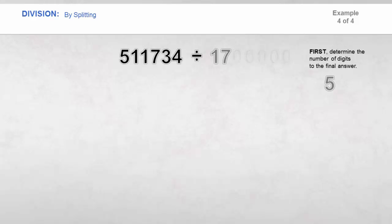The divisor is 17. Therefore, by looking at the number, we need to split 511,734 into 3 parts of 51, 17, and 34. Then divide each part by 17, starting on the left.